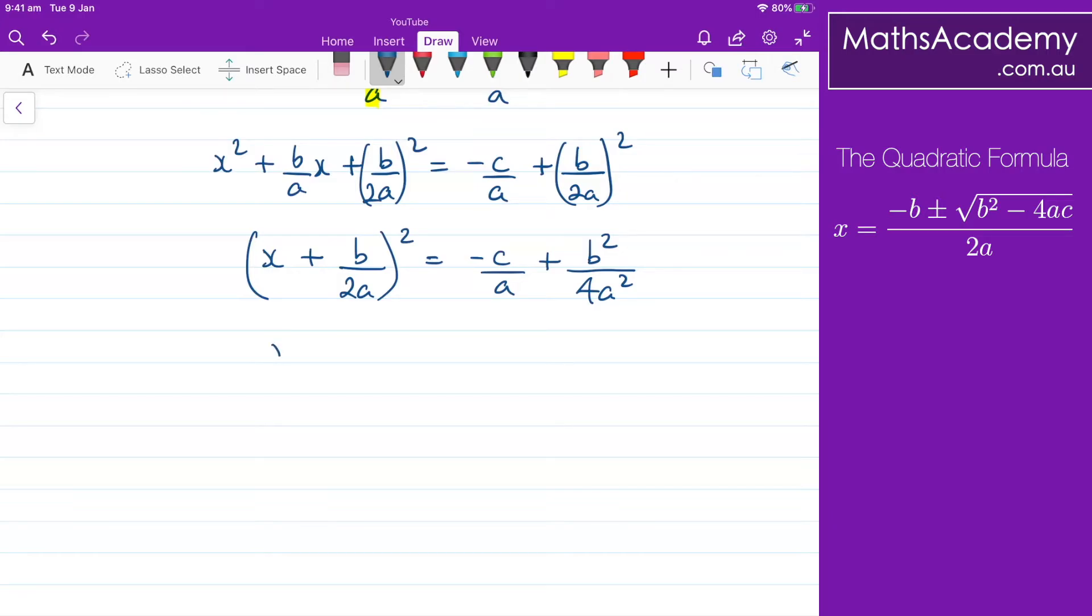I will leave the left hand side as it is for the time being. So (x + b/2a) and that's all squared. And on this right hand side here I'm going to get a common denominator. To get a common denominator what I'd have to do is multiply this left hand fraction by 4a/4a. So what I would have would be (b² - 4ac)/(4a²). So I've just done a little bit of rearranging there. Put the b² term first and then the -4ac.